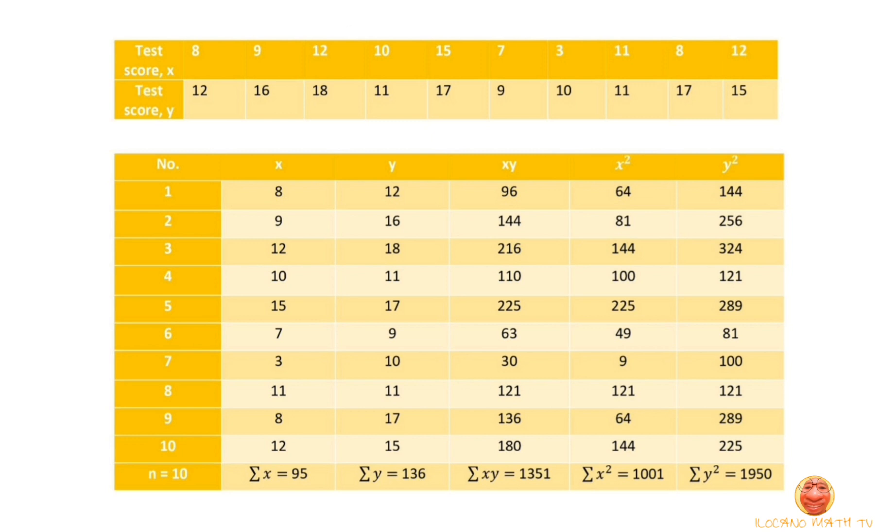The next is XY, or the product of X and Y. So we'll just multiply X to Y, just like 8 times 12 is equal to 96, and then just follow it for the succeeding rows. We can also use our scientific calculator here. So, the overall summation of XY is 1351. Next is X squared. Here, we just need to multiply the value of X by itself. So, 8 times 8 is equal to 64. And, of course, continue doing it for the succeeding rows. And then, we'll get the summation of X squared, that is 1001.